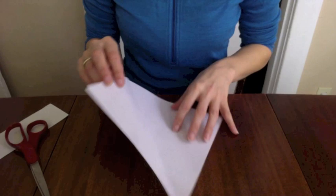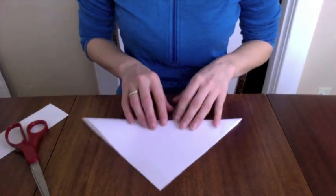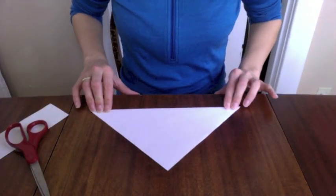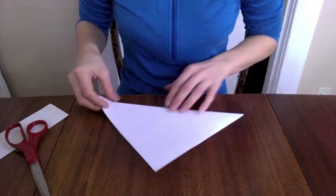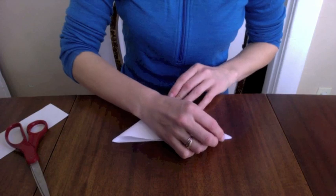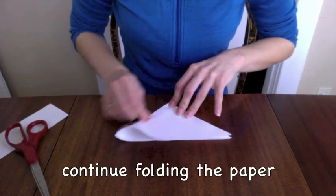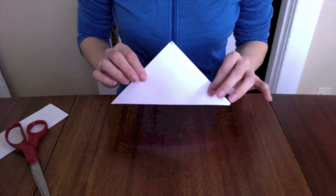So you're going to continue to fold this piece of paper. Now we have a triangle and if we fold it in half again, we have another triangle.